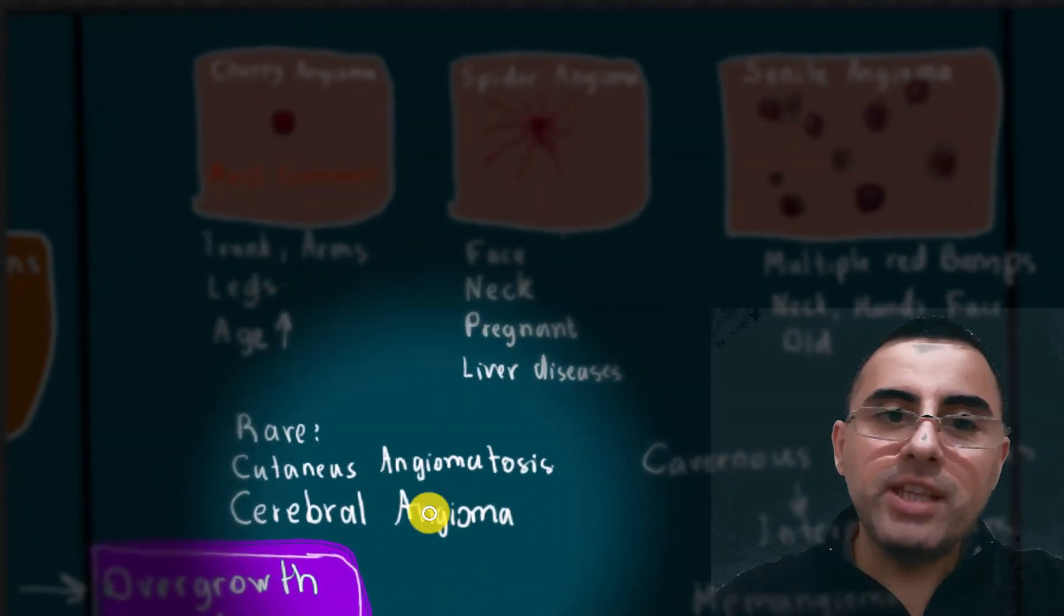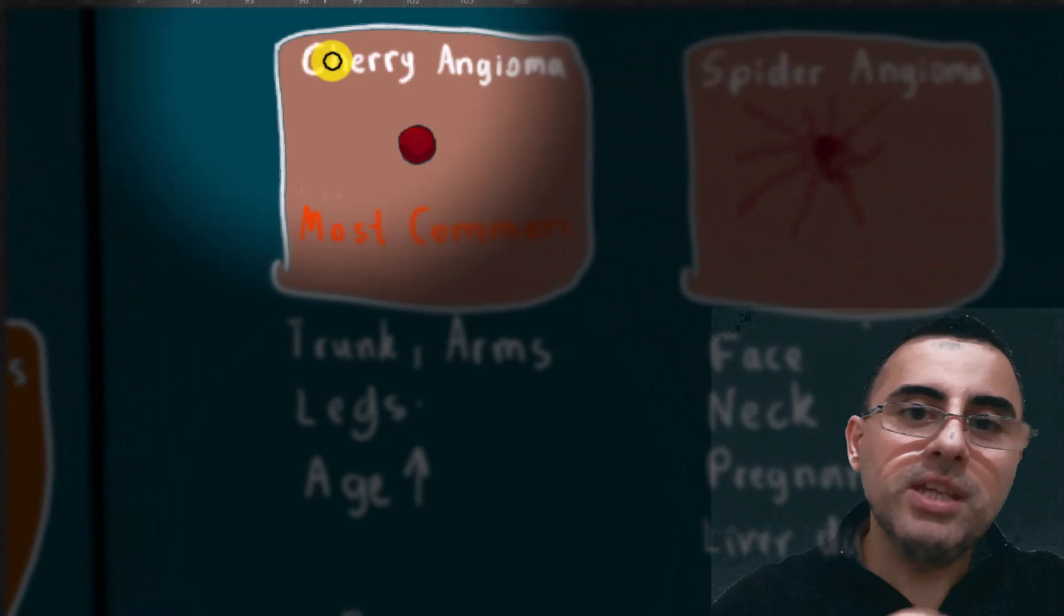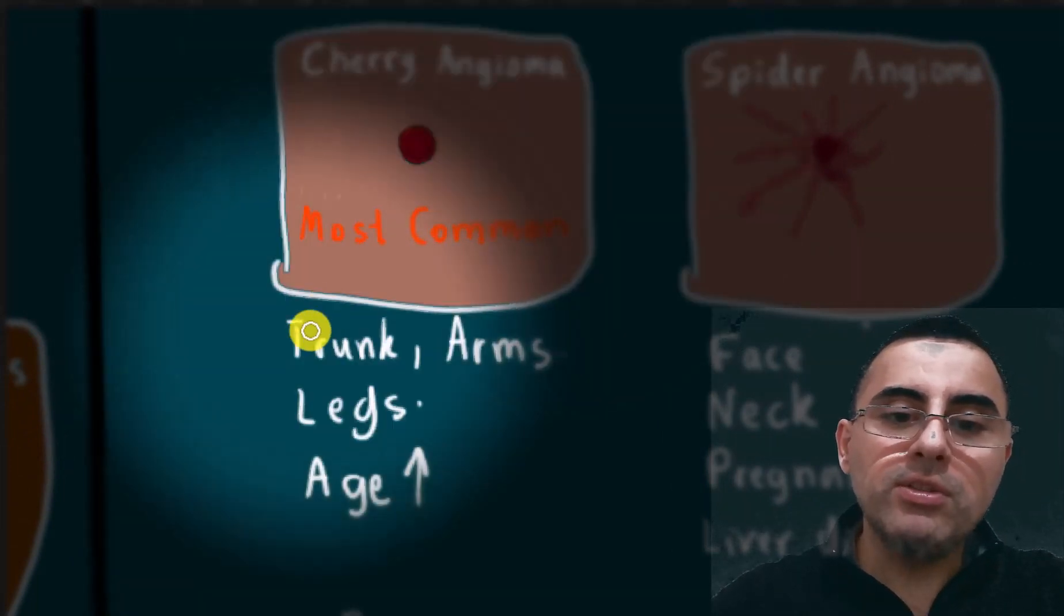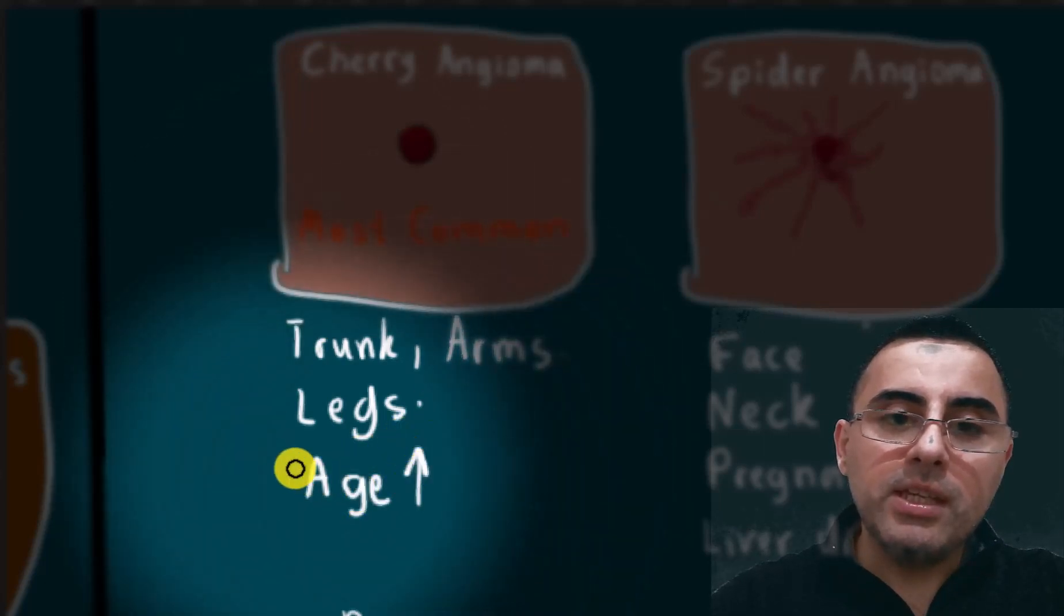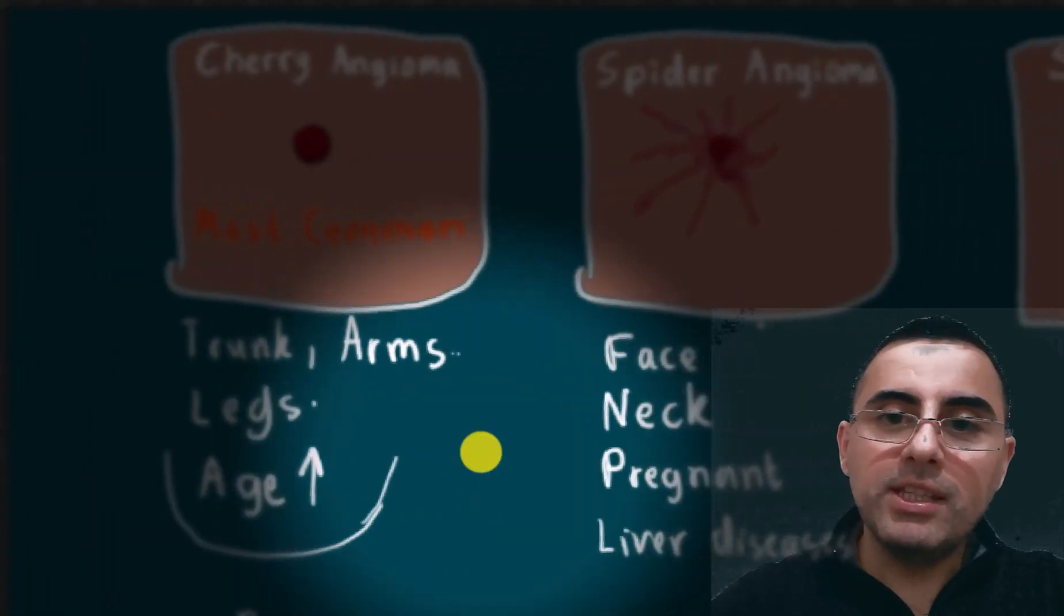There are several types of angiomas. The most common type is cherry angioma. It often occurs on trunk, arms, and legs. The risk of cherry angioma increases with age. Cherry angioma is usually benign and has no major risk.